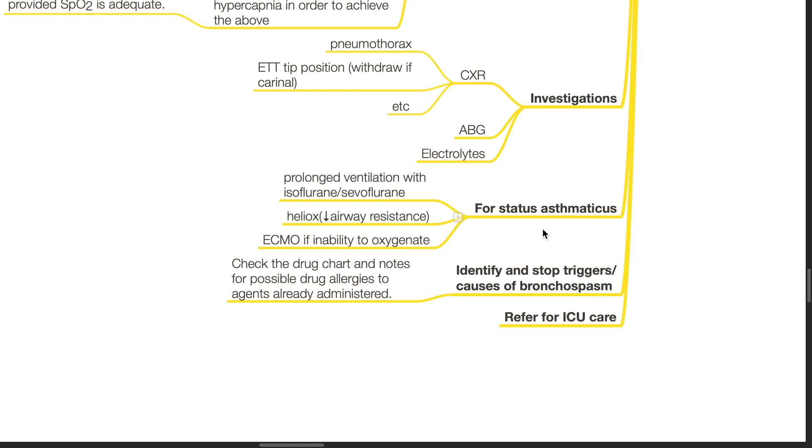For status asthmaticus, prolonged ventilation with isoflurane or sevoflurane, heliox which reduces airway resistance and extracorporeal membrane oxygenation if unable to oxygenate are options for management. Identify and stop triggers and causes of bronchospasm. Check the drug chart and notes for possible drug allergies to agents already administered. Refer for ICU care.